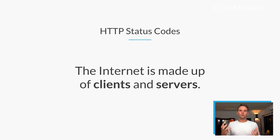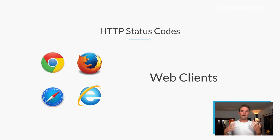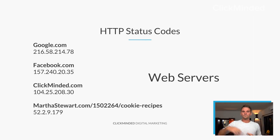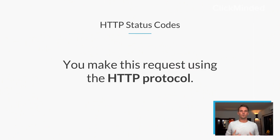The internet is made up really of two core things — clients and servers. You have clients, web clients — that's your browser. Maybe it's Chrome, maybe it's Firefox, maybe it's Safari, or maybe it's Internet Explorer. You're usually accessing the internet through one of these clients. Whenever you request a website, you're usually making a request from a web server. You make a request, and the server responds. That's happening every single time you're clicking a link.